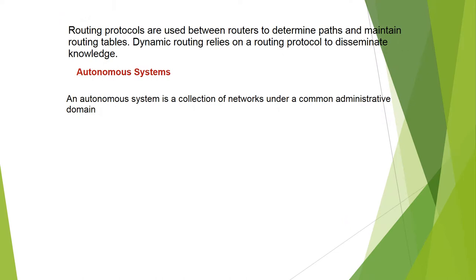Routing protocols are used between routers to determine paths and maintain routing tables. Dynamic routing relies on a routing protocol to disseminate topology information. An autonomous system is a collection of networks under a common administrative domain.